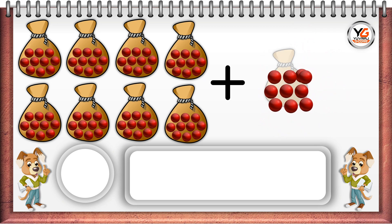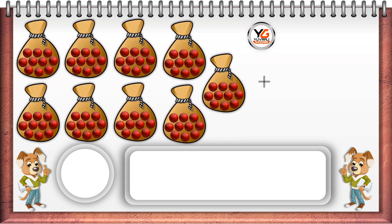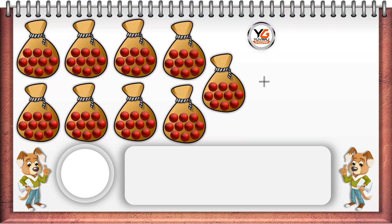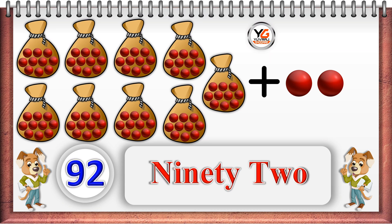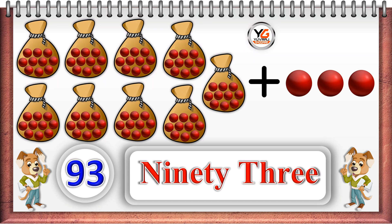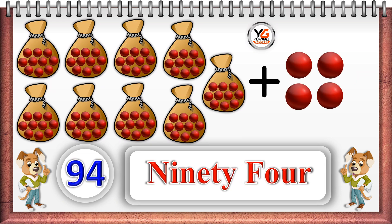Ten units means one 10: 9 10s: 90. Nine 10s and one unit: 91. Nine 10s and two units: 92. Nine 10s and three units: 93. Nine 10s and four units: 94.